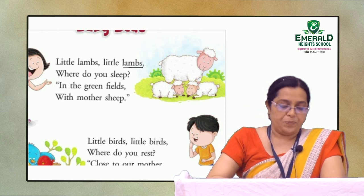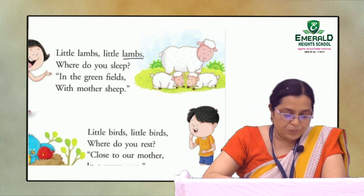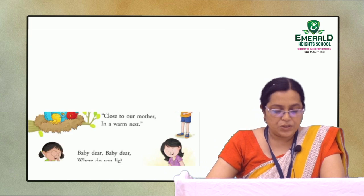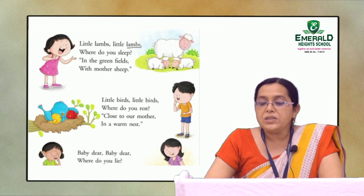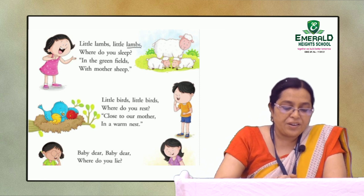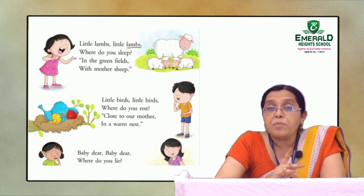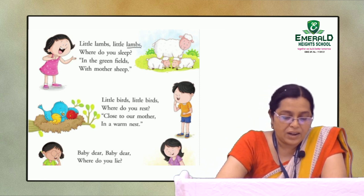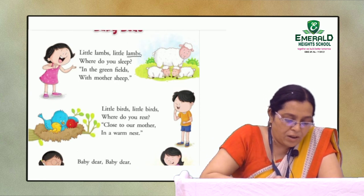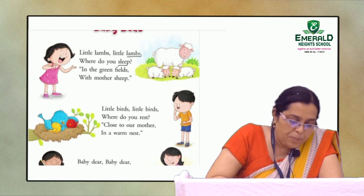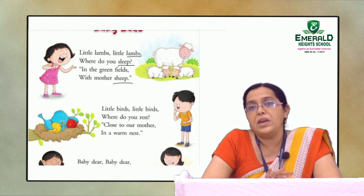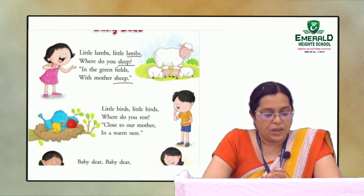Now for this first stanza, underline the rhyming words in the four lines. The rhyming words are 'sleep' and 'sheep.' Now we will go to the second stanza of the poem.